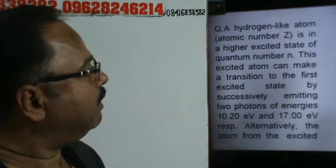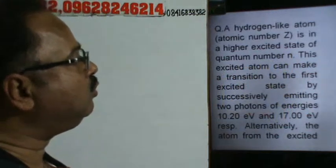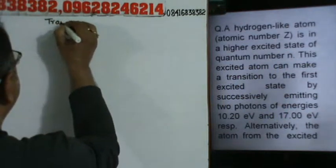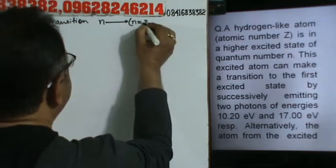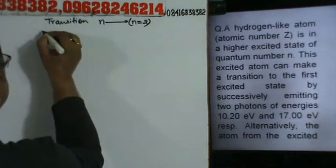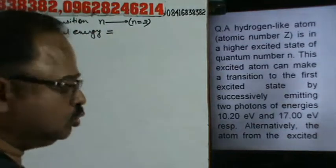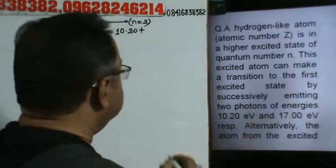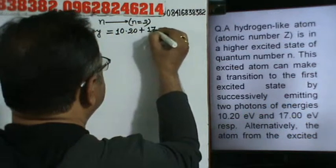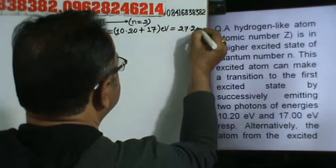The concept is that we have an unknown excited state, which is the value of N, and there is a transition from N to the first excited state, that is N equal to 2. The total energy equals the sum of the two photon energies: 10.20 plus 17 electron volt, which comes to be 27.2 electron volt.